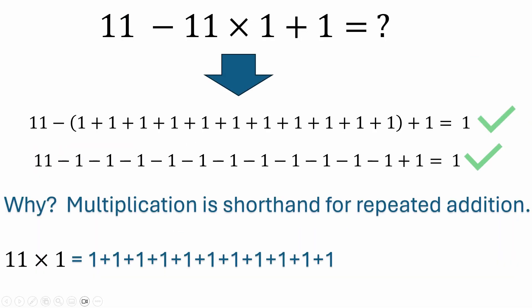The correct answer to the problem is 1, which you may have gotten the correct way, or you may have accidentally come across it by going left to right. I hope this video has been helpful. I've got some links in the description on the order of operations, and also links regarding calculators and how different calculators solve. Please consider liking, sharing, and subscribing — I look forward to seeing everybody in the next video.